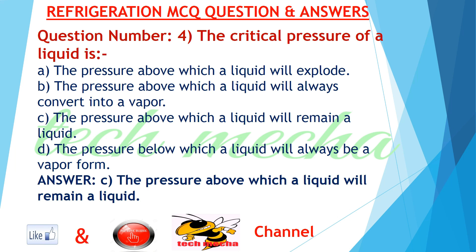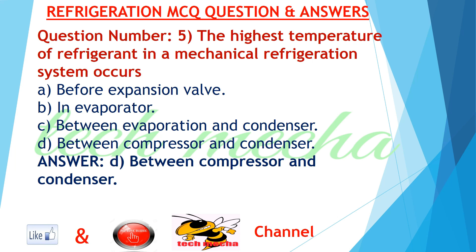C. the pressure above which a liquid will remain a liquid, D. the pressure below which a liquid will always be in vapor form. Answer: C. the pressure above which a liquid will remain a liquid. Question number 5: The highest temperature of refrigerant in a mechanical refrigeration system occurs...